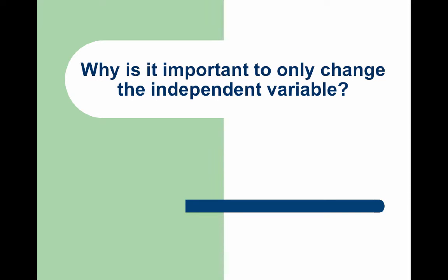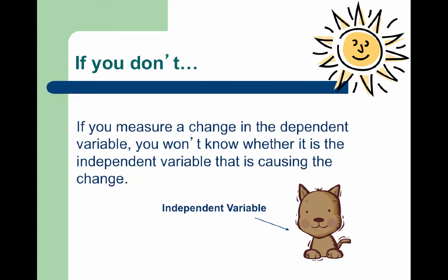Why is it so important to only change the independent variable? If we don't change only the independent variable, our dependent variable can respond to other changes, so we won't be sure if it was actually the independent variable causing the change or something else.